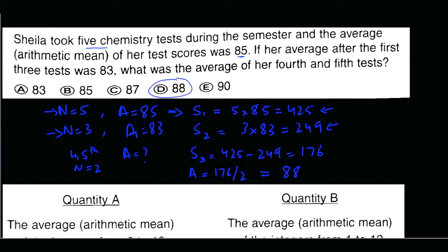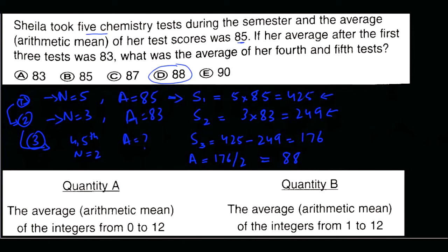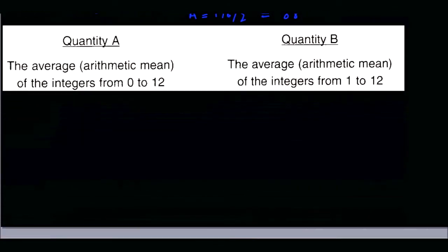This is a very typical GRE problem where the average information is divided into two rounds, and you use both pieces of information together to find a third. Make sure you get a really good handle on this type of question. Next, let's look at a quantitative comparison question.